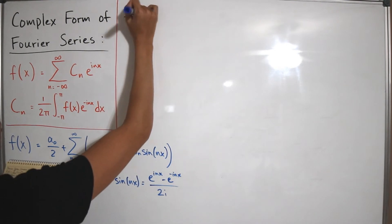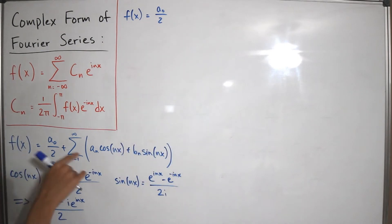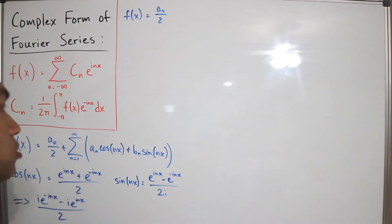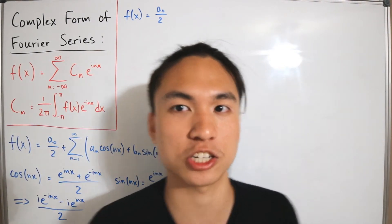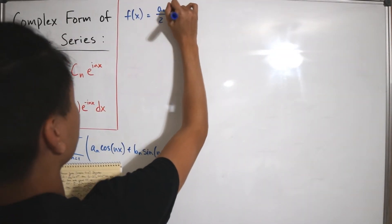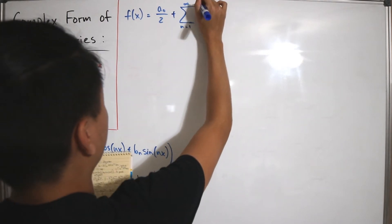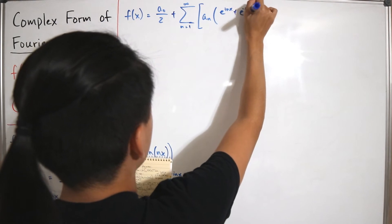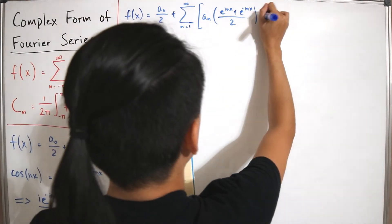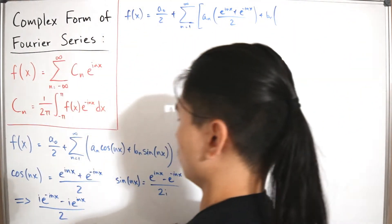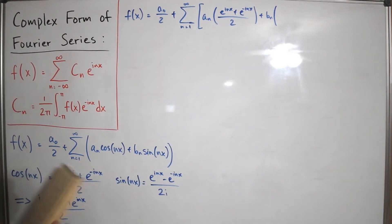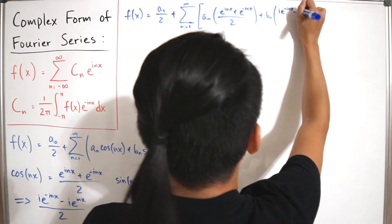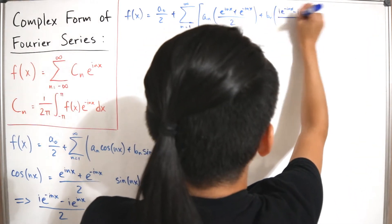Now we plug these back into f(x). So f(x) equals a sub zero divided by two, plus the infinite sum from n equals one to infinity of: a sub n times the cosine substitution — e to the i times n times x plus e to the negative i times n times x, divided by two — plus b sub n times the simplified sine form: i times e to the negative i times n times x minus i times e to the positive i times n times x, divided by two.